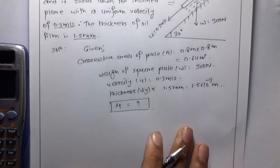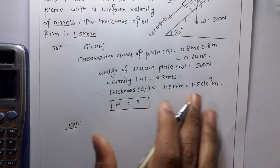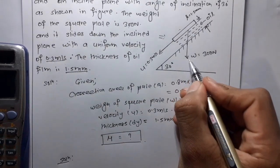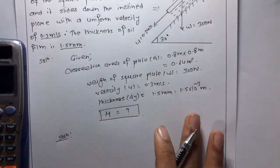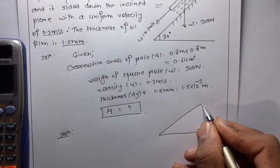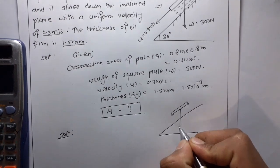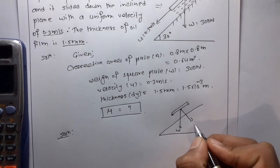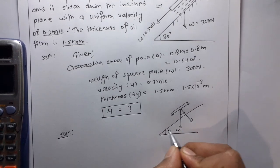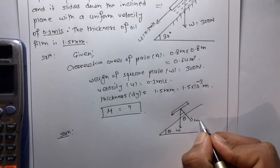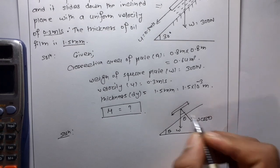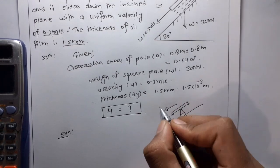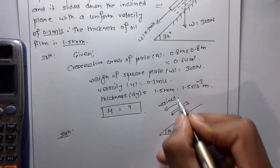Now, for solution, first we resolve this W. So, this is W, this is theta and this is theta, so this is W cos theta and this is W sin theta.